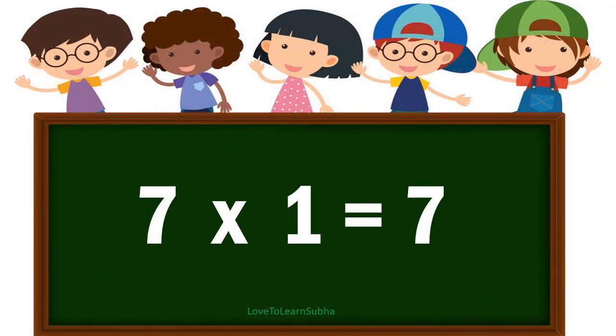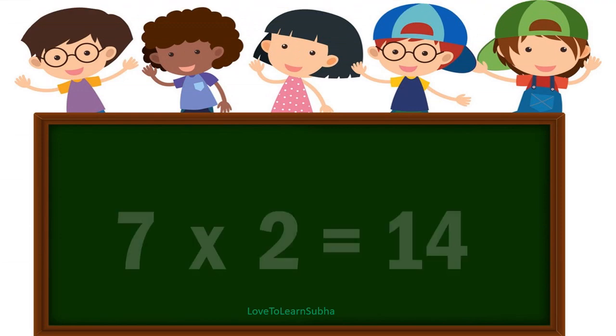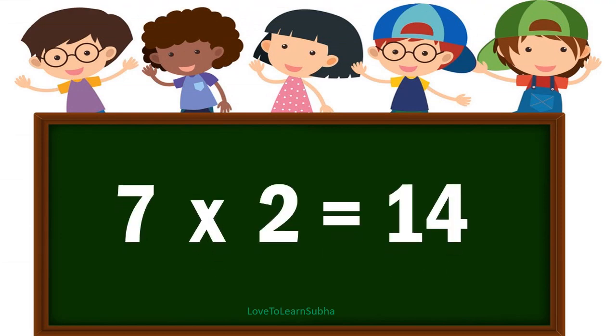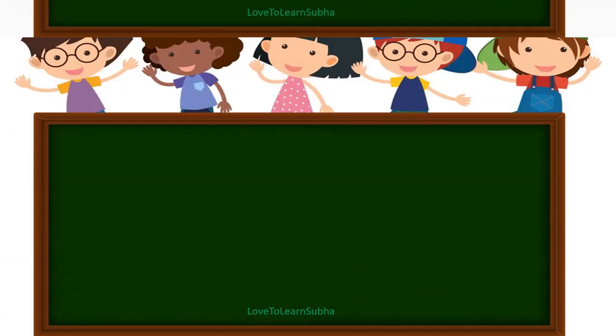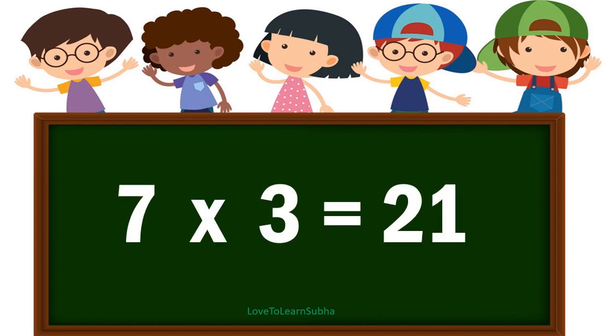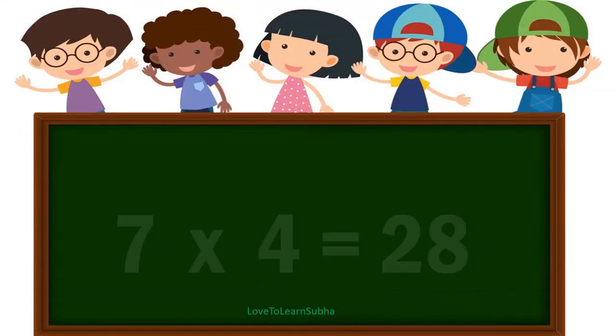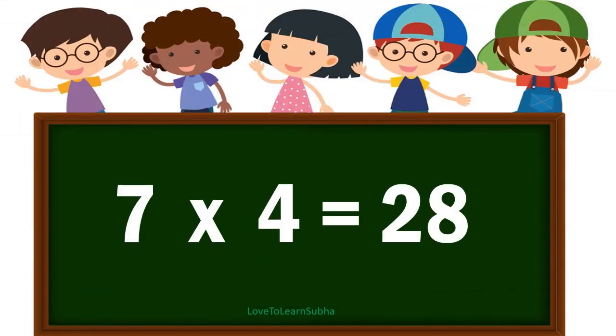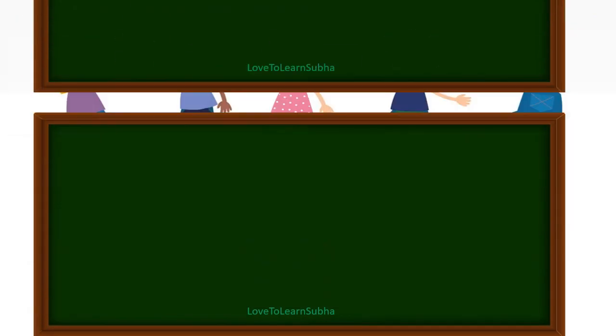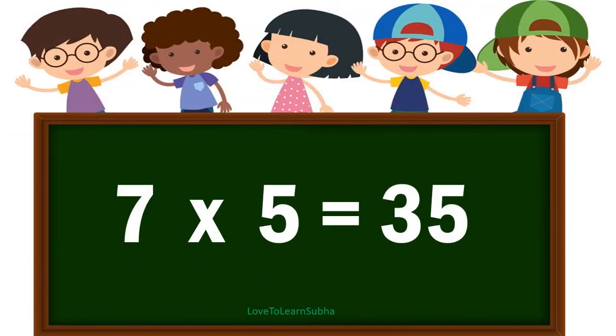7 1s are 7. 7 2s are 14. 7 3s are 21. 7 4s are 28. 7 5s are 35.